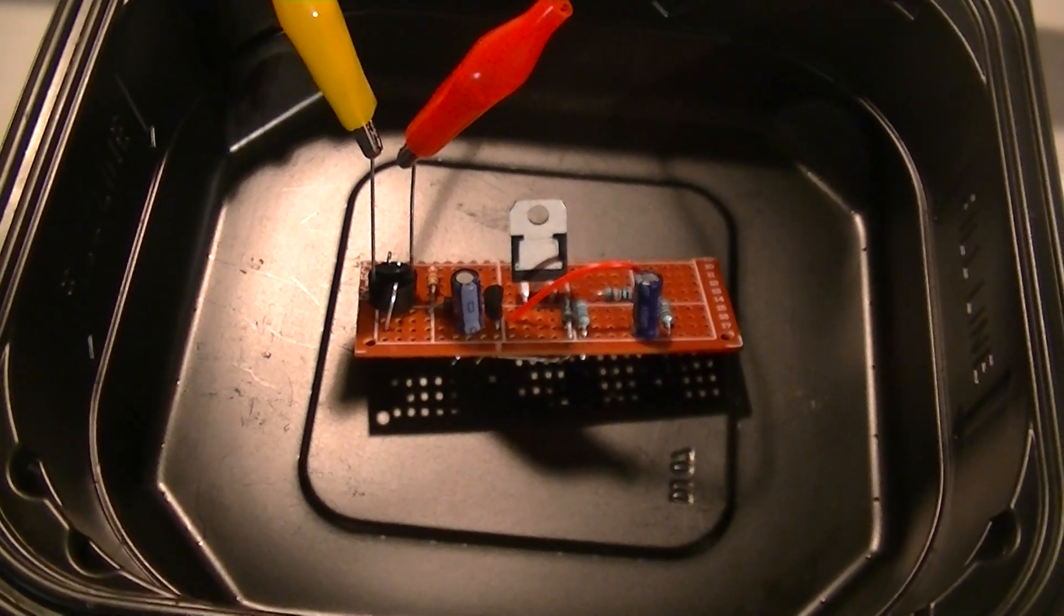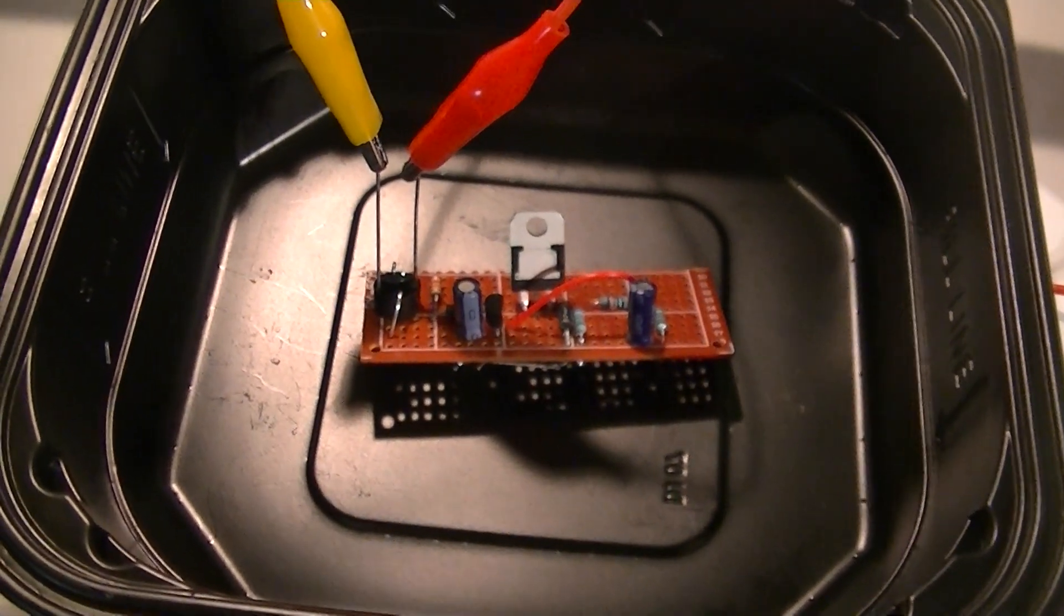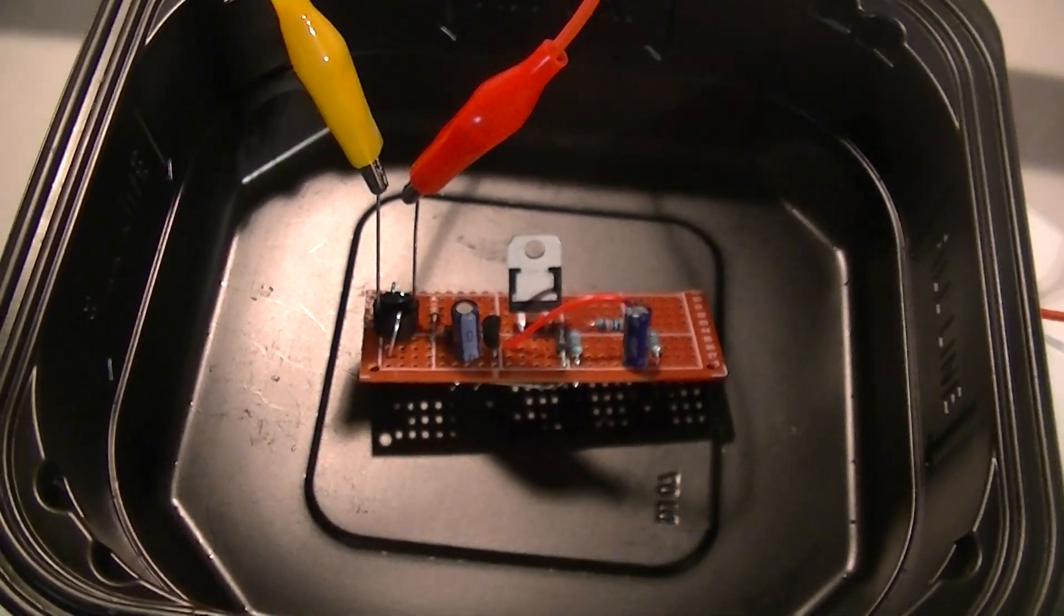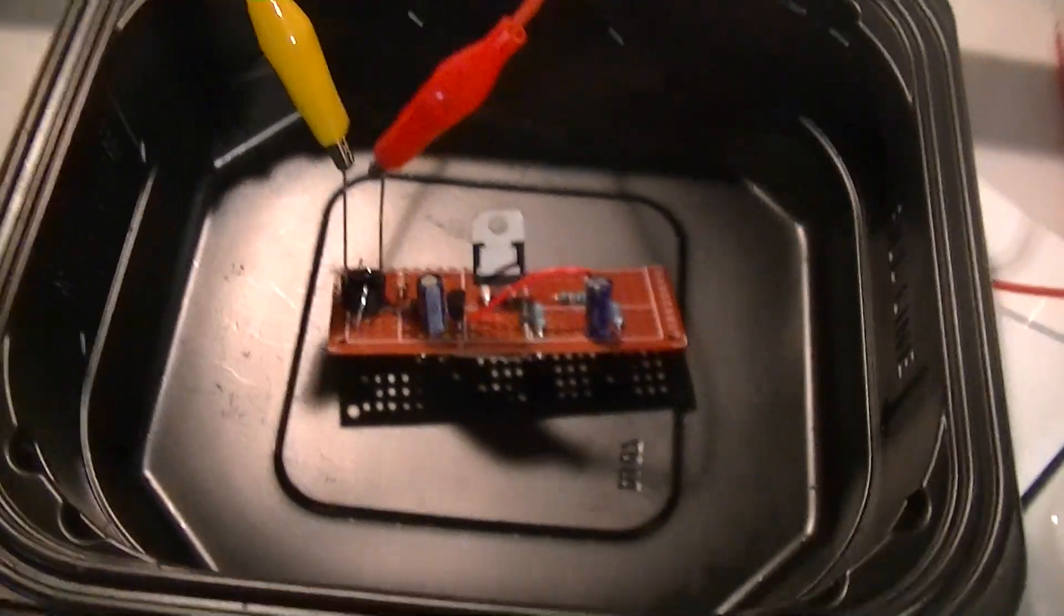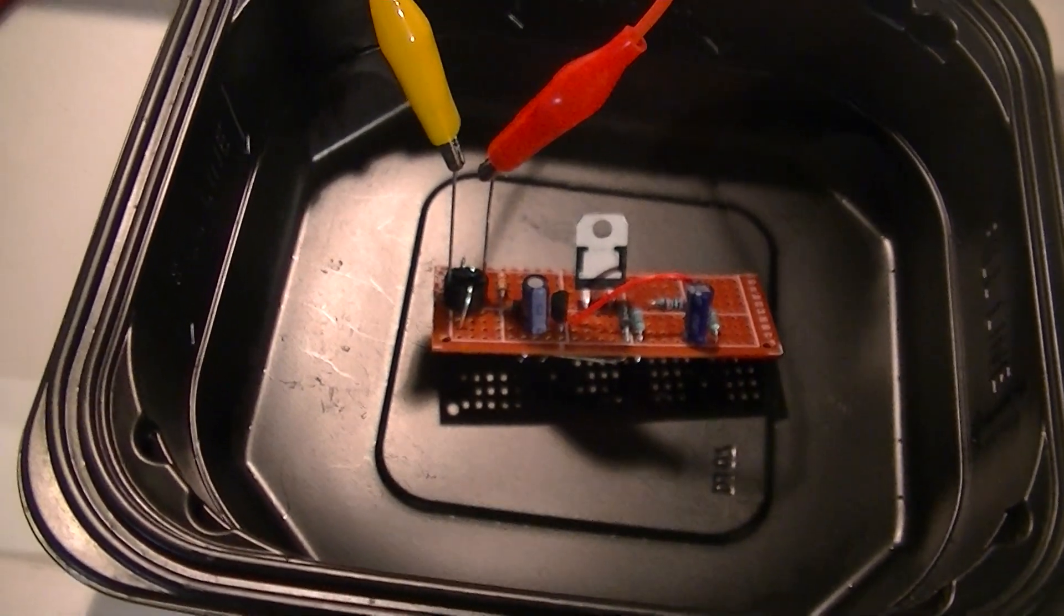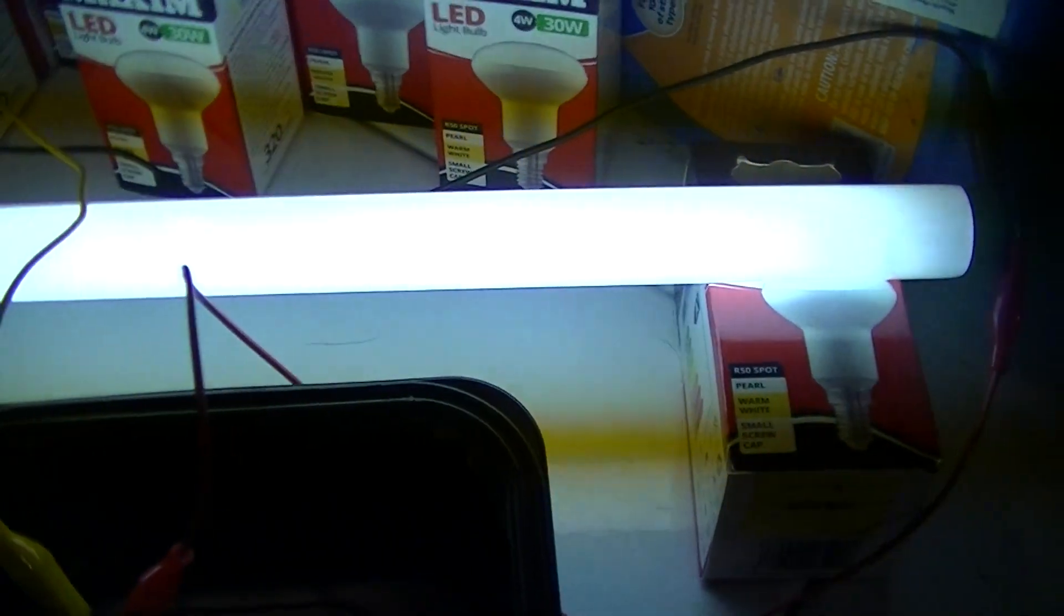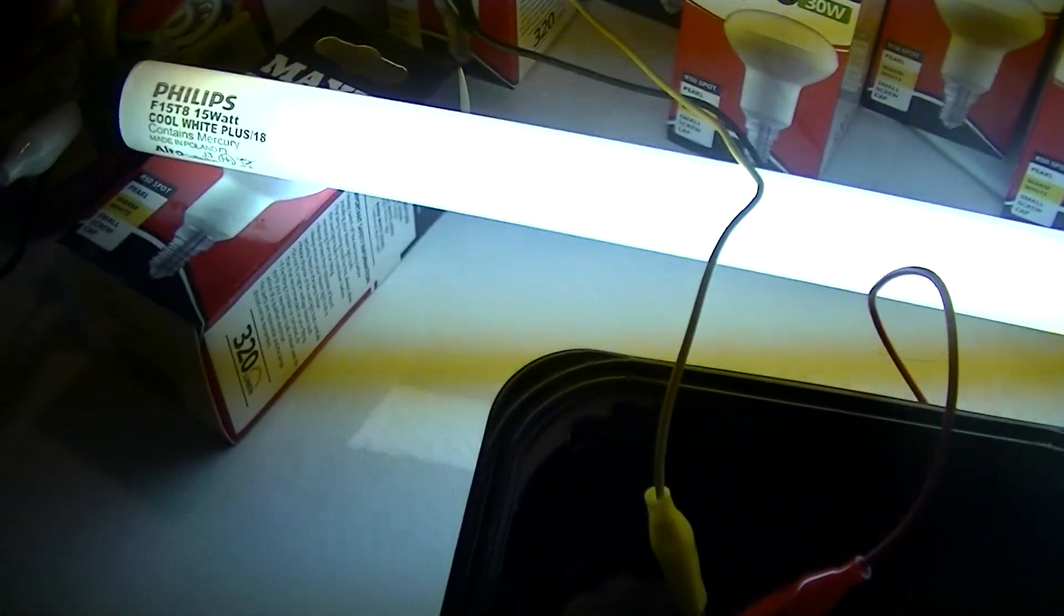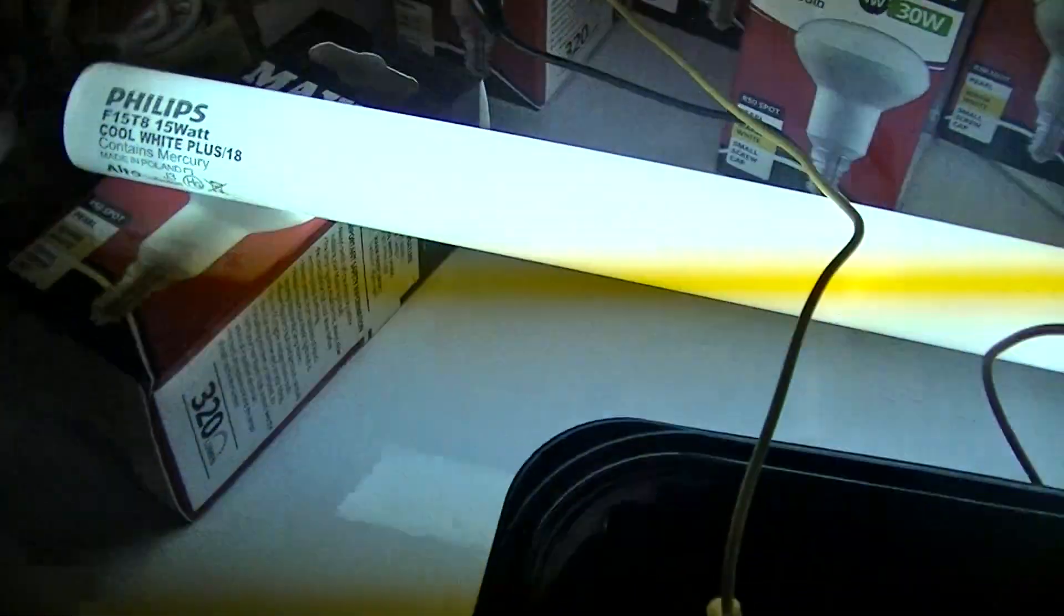This is a simple electronic fluorescent starter that I just built using a TN22 high holding current triac, actually made specifically for this application. Click... there we go. Just a quick and dirty lash up with an F15 T8 fluorescent lamp there.